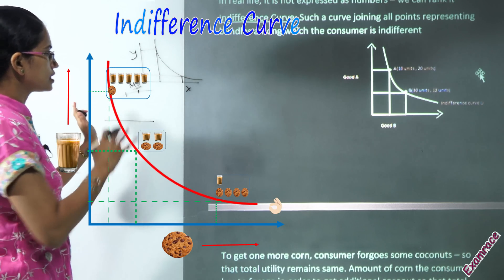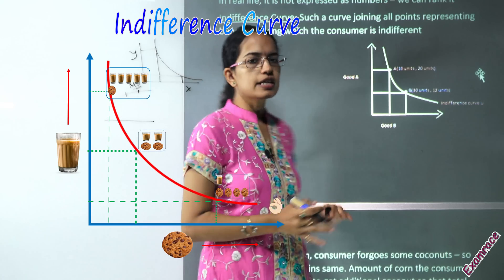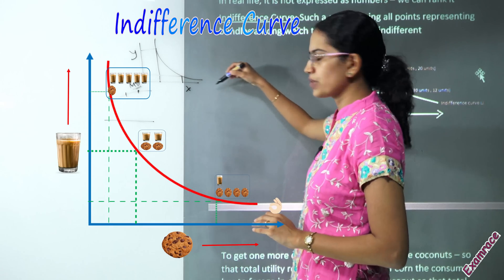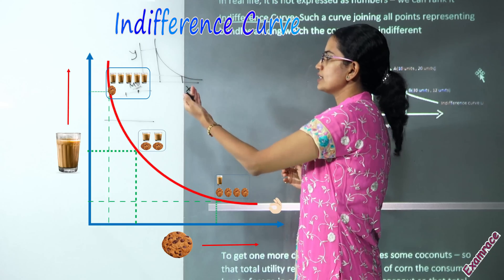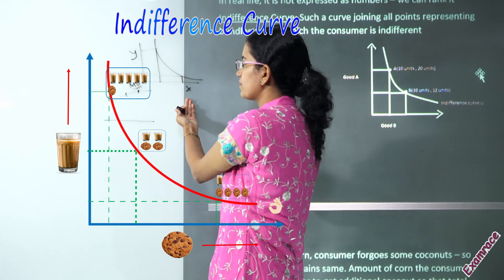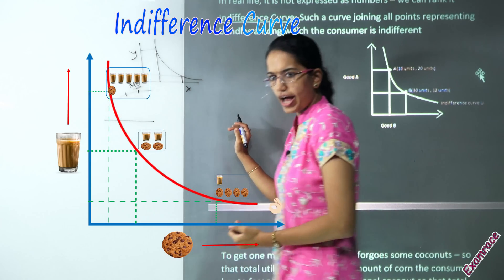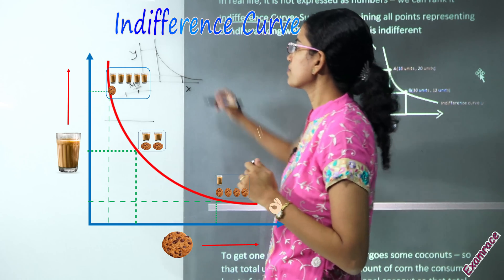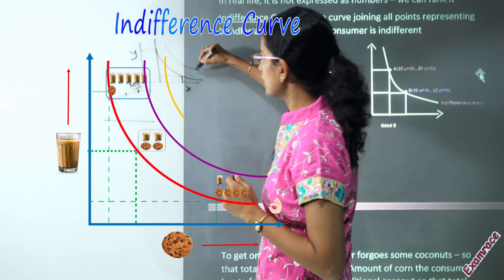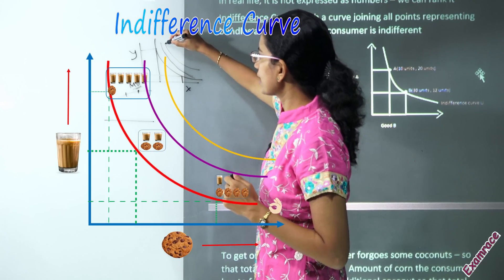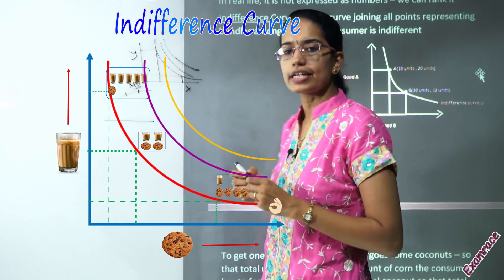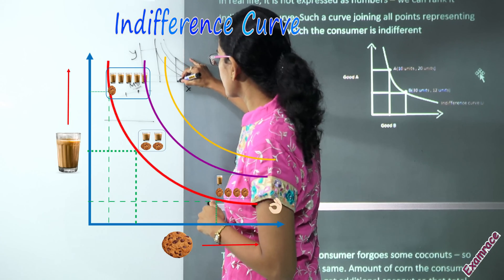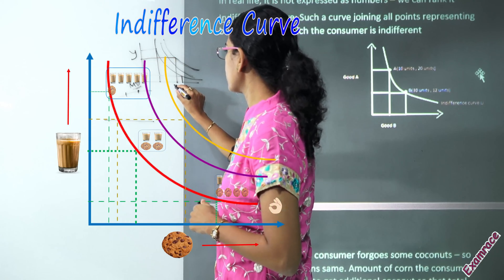Certain specific characteristics of an indifference curve are really important. An indifference curve always moves from left to right and slopes downward, because to attain an extra unit of x you must forego a specific unit of y — this is explained by the marginal rate of substitution. When numerous indifference curves are drawn, a higher indifference curve represents a greater amount of utility.